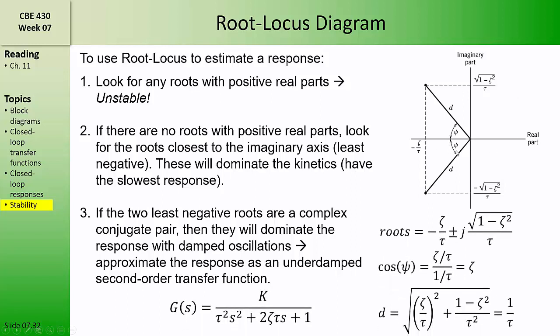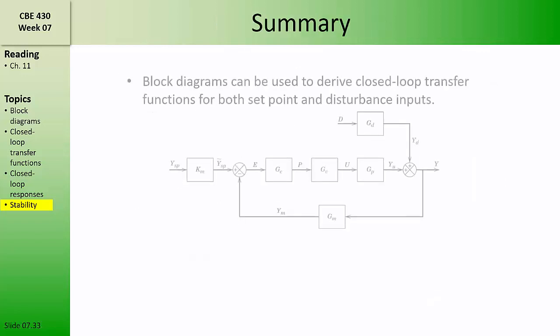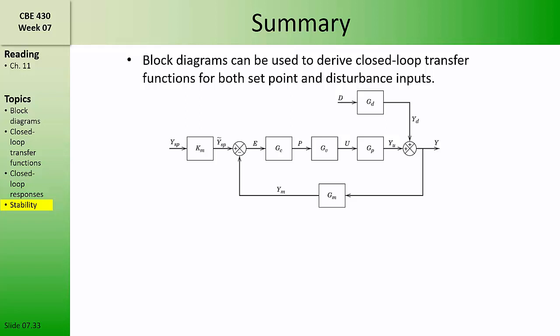The damping coefficient can also be found by taking the cosine of the angle psi that a complex root makes with the real axis. The distance between the complex root and the origin can also be used to approximate the time constant tau. In chapter 11 of the Seaborg text, we first learned how to build block diagrams for standard feedback control loops, and that those block diagrams can be used to derive transfer functions for both setpoint and disturbance inputs.